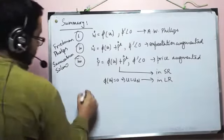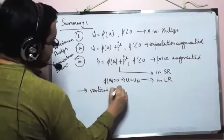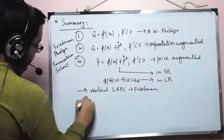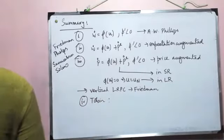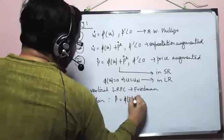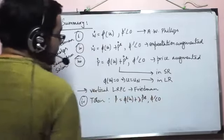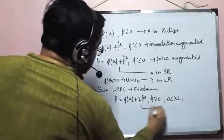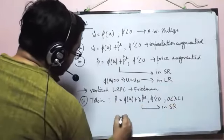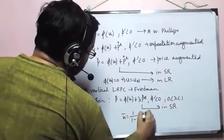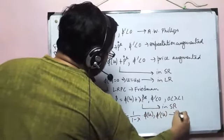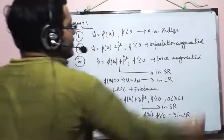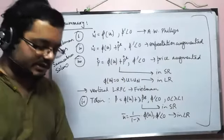Where we have studied that the vertical LRPC goes to Friedman. Then comes Tobin, which is kind of an extremist view, which is P dot equal to phi U plus Lambda P dot. Here also phi dash negative and Lambda lies between zero and one. Then we have phi equal to one by one minus Lambda into phi U, with phi dash negative. And that's in the long run. So these are the different kinds of Phillips curve that we have studied. And there was a difference of opinion that you observed a lot.